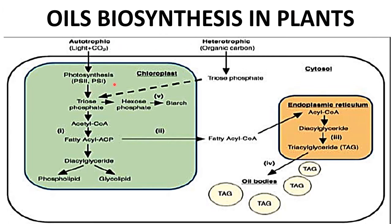Usually in the chloroplast, light and carbon dioxide from the atmosphere are utilized for photosynthesis — photosystem 1 and photosystem 2. First, triose phosphate is produced. It will either be converted into hexose phosphate and then into endosperm starch, or this triose phosphate will be converted into acetyl-CoA and then into fatty acyl ACP.